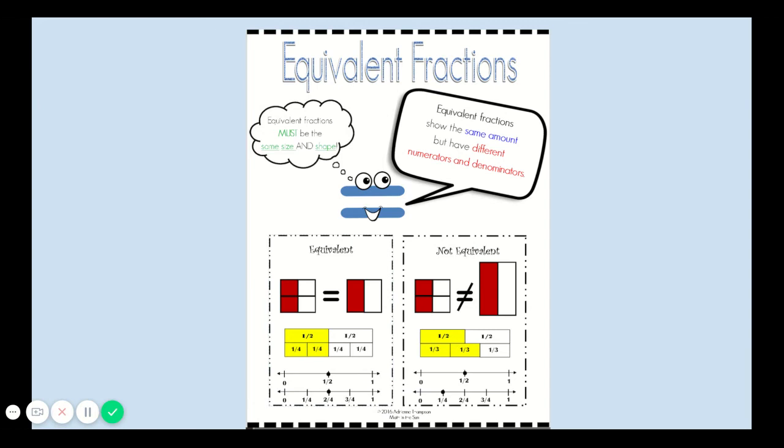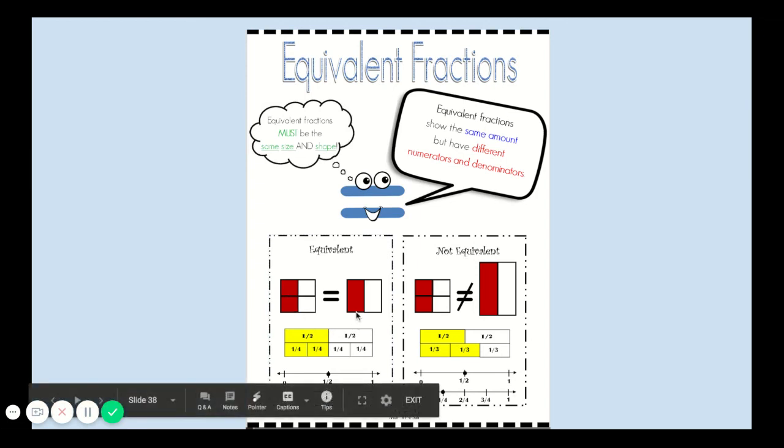When we're looking at equivalent fractions, they must be the same size and shape. In this example, we have two fourths is equivalent or equal to one half. We can see that from the picture. They're the same size, the same shape, and the same amount is shaded, but they have different numerators and denominators.